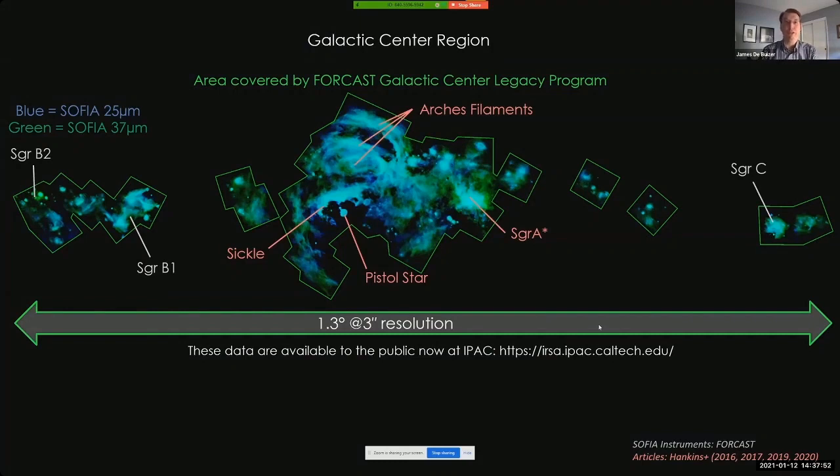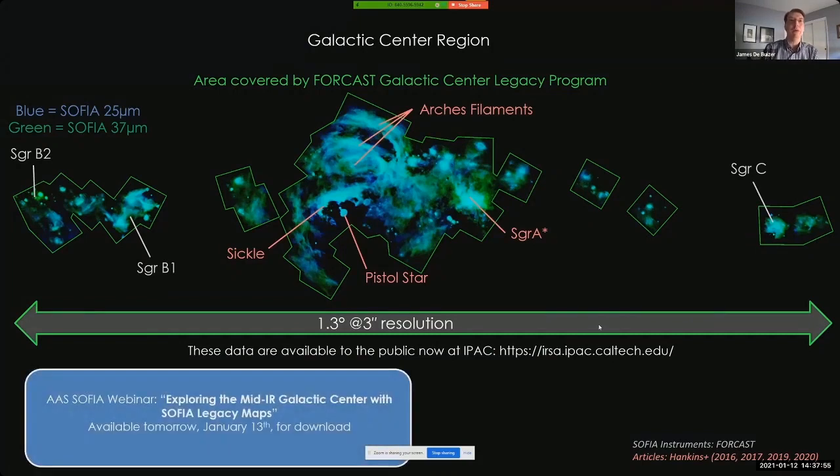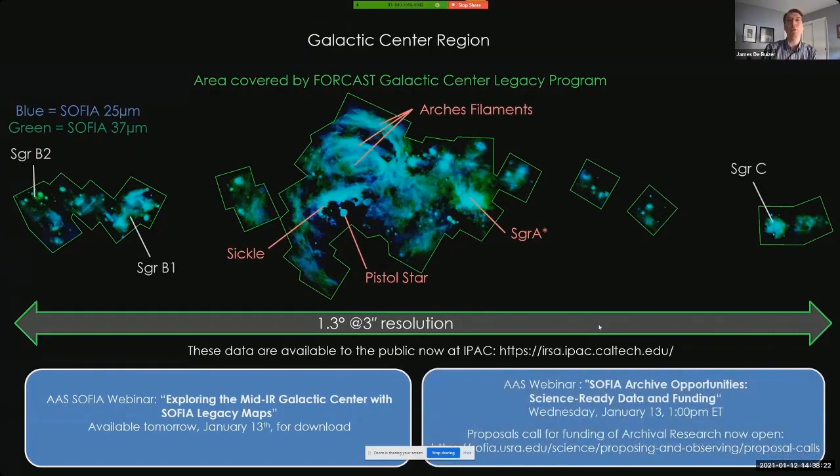Also, this morning there was a special SOFIA webinar organized to present this publicly available dataset to all interested researchers and to discuss potential projects, address different techniques for deriving information from the data, and exploiting its scientific value. If you're interested, this webinar will be available for download by this time tomorrow. And related to this, if you're interested in these Galactic Center data or any data in SOFIA archives but you need funding, there are funding opportunities available to you right now. There's presently an open call for archival proposals, but additionally there's an informational SOFIA webinar tomorrow about this topic entitled SOFIA Archive Opportunities, Science-Ready Data, and Funding.